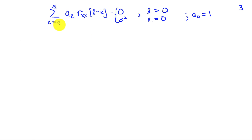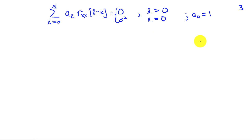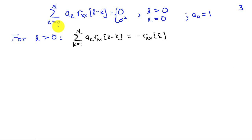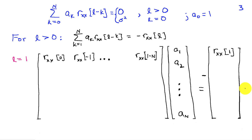We can summarize this relationship: the sum from k equals 0 to N of a_k times r_xx of l minus k equals 0 for l greater than 0, and equals sigma squared when l equals 0, with a_0 equal to 1. When l is greater than 0, we can move the k equals 0 term to the right-hand side, giving the sum from k equals 1 to N of a_k times r_xx of l minus k equals negative r_xx of l. This relationship can be written in matrix-vector form by writing a separate equation for each value of l.